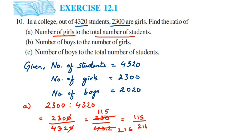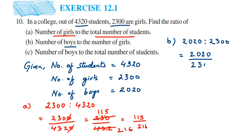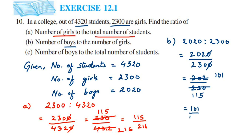For the second question, they are asking for the number of boys to the number of girls. The number of boys is 2020 and the number of girls is 2300. The ratio should always be in reduced form, so we write it as 2020 divided by 2300. Canceling the zeros gives 202 over 230. Both are even, so we divide by 2 to get 101 over 115.